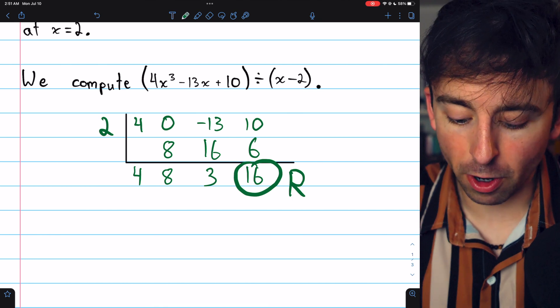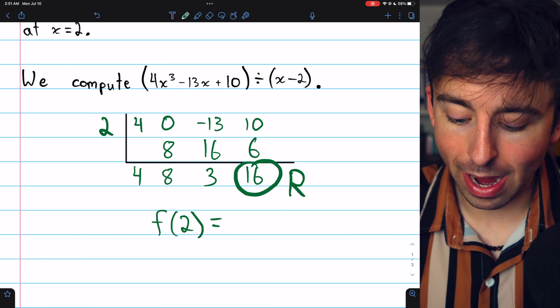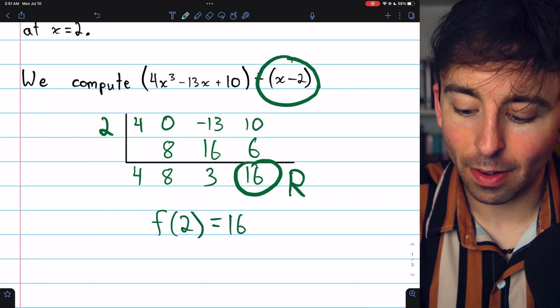Which by the remainder theorem, is the value of the function at 2, because this was the remainder when we divided by x minus 2.